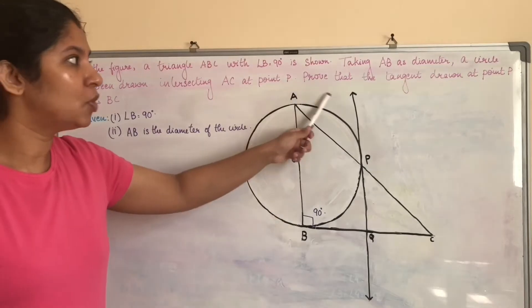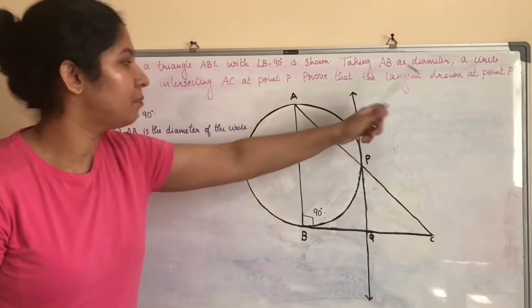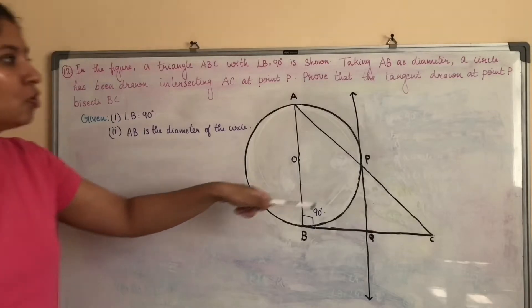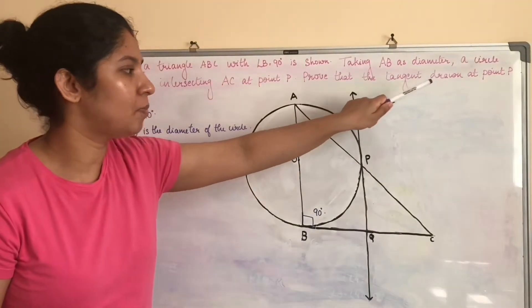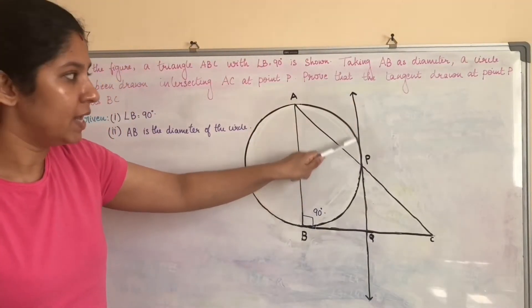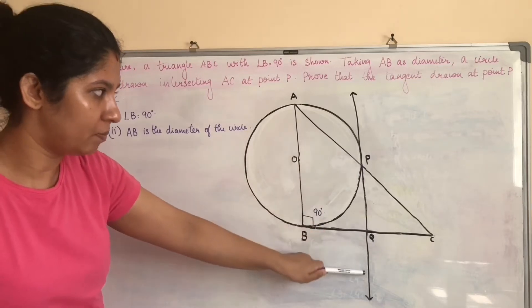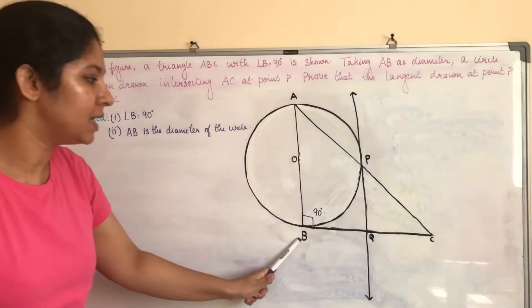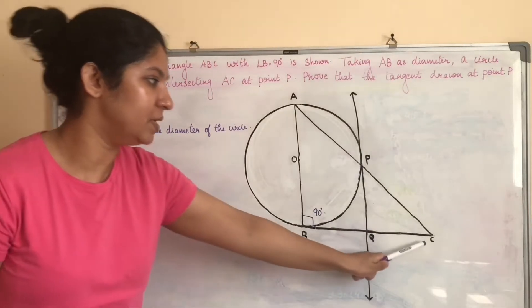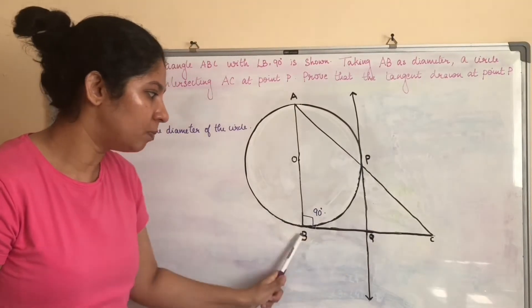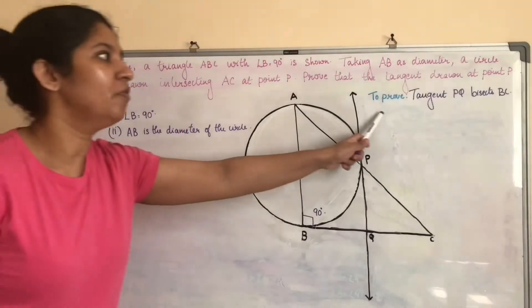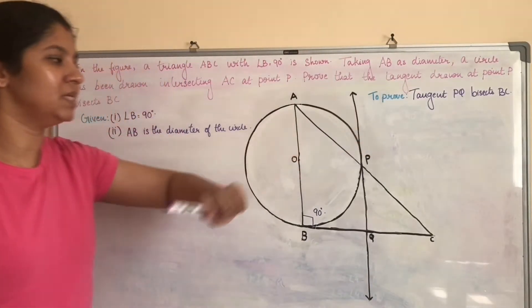To prove: the tangent drawn at point B, that is PQ, bisects BC. This means Q is the midpoint of BC, or BQ equals QC.